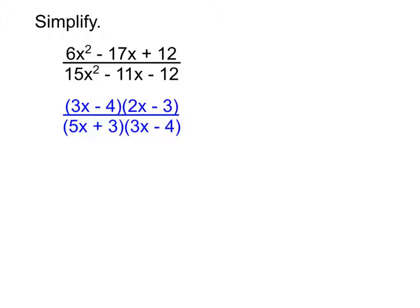That was the hard part of this problem. From here it's easy — or at least I hope it is. What we're doing is just looking to see what can I cancel out of both the top and the bottom. Notice that two of those parentheses — one set from the top and from the bottom — are the same, so I can go ahead and cancel those. If I do so, I end up with 2x minus 3 over 5x plus 3. Now, can I cancel out these 3s? No. Remember, in order to cancel something out of top and bottom, I would have to cancel it out of every single term in both top and bottom.